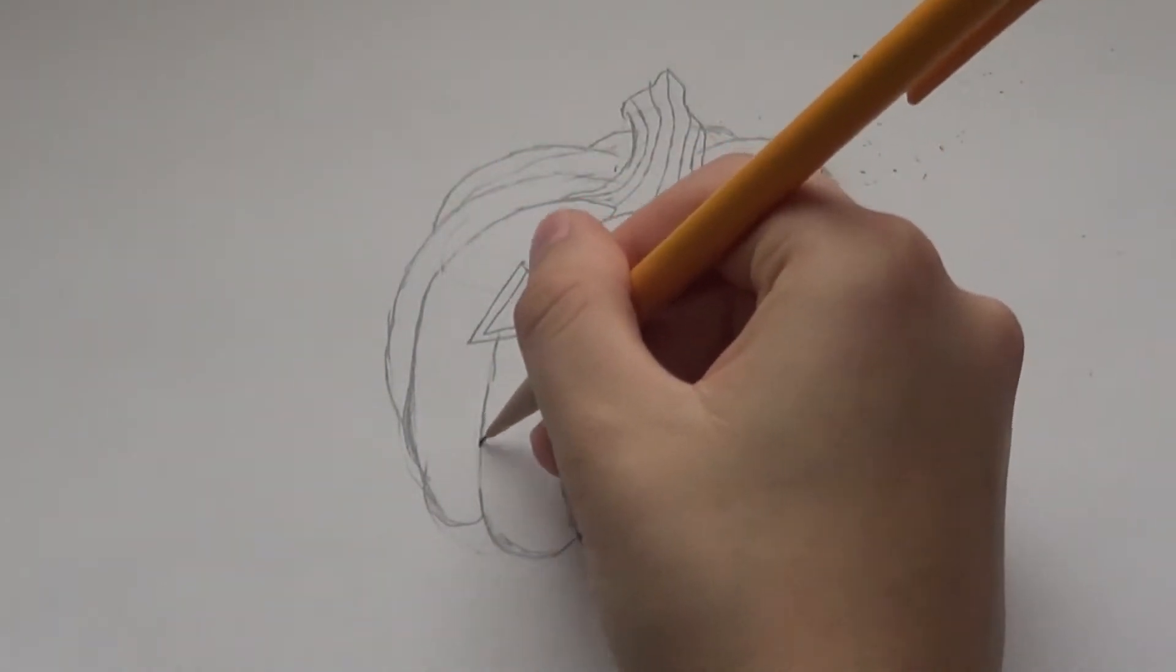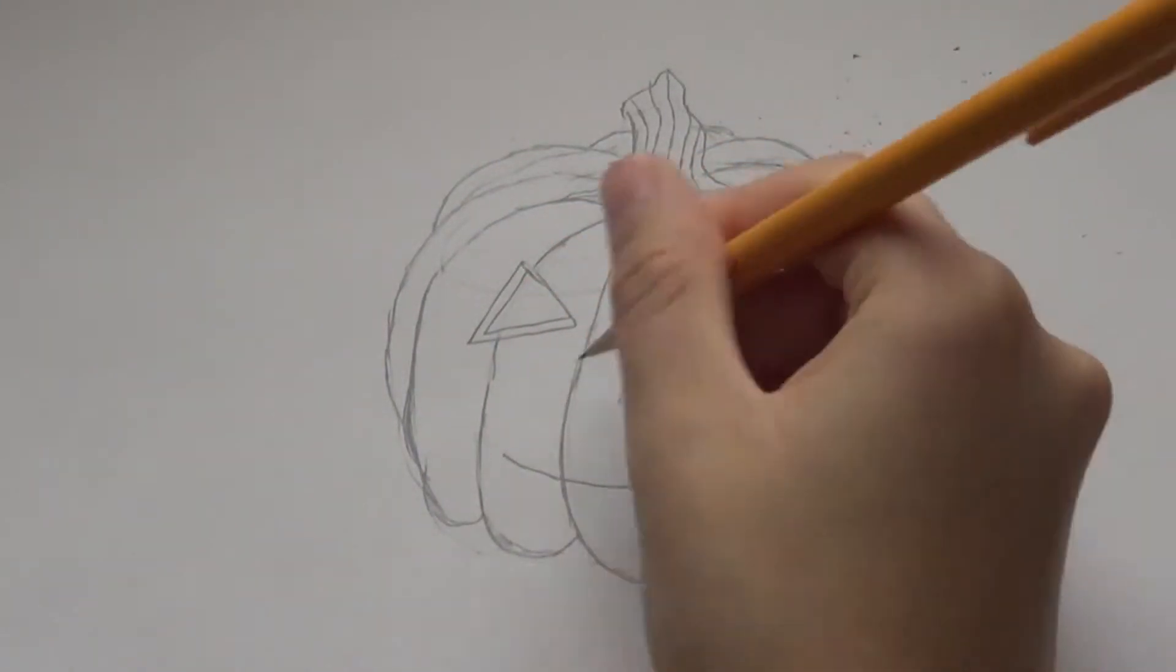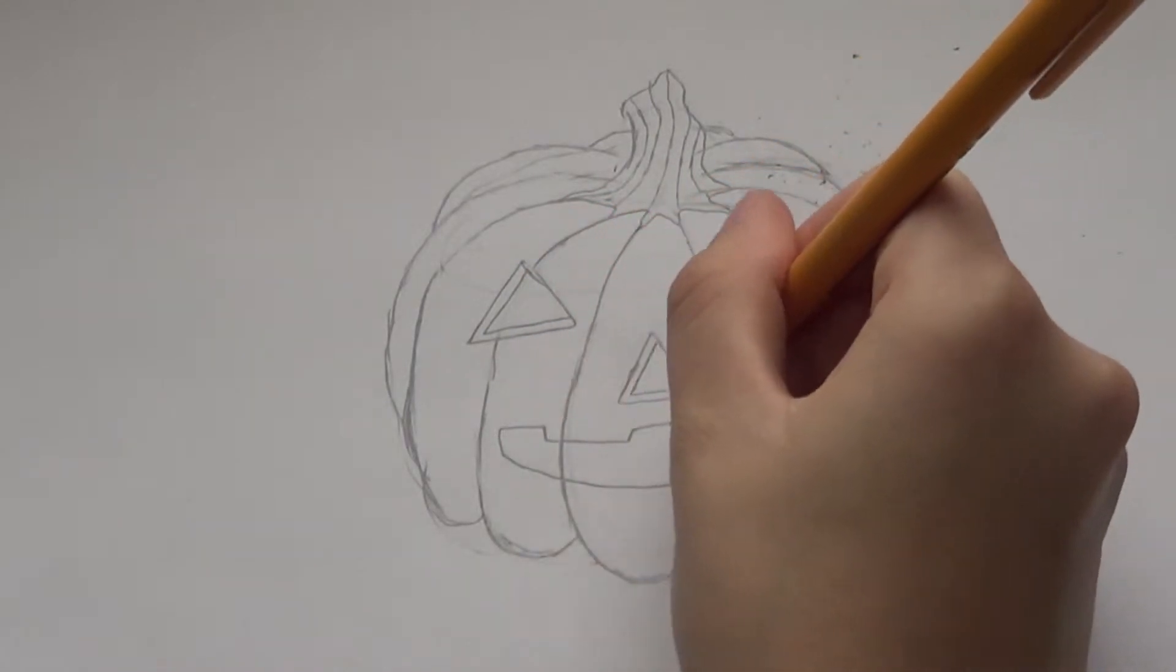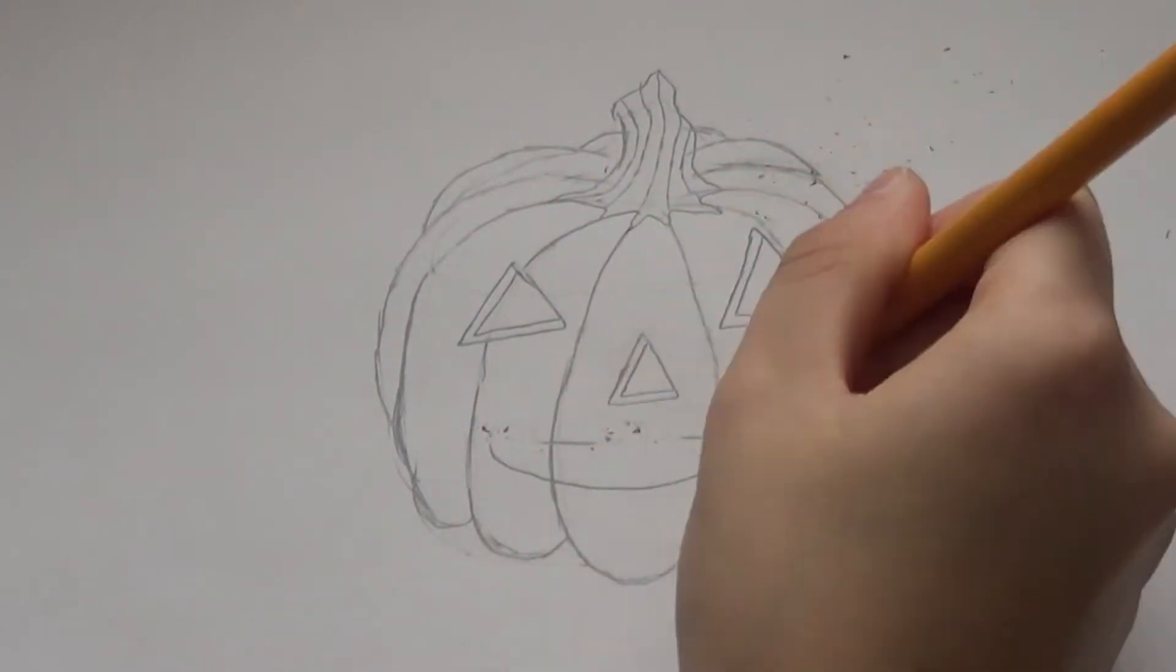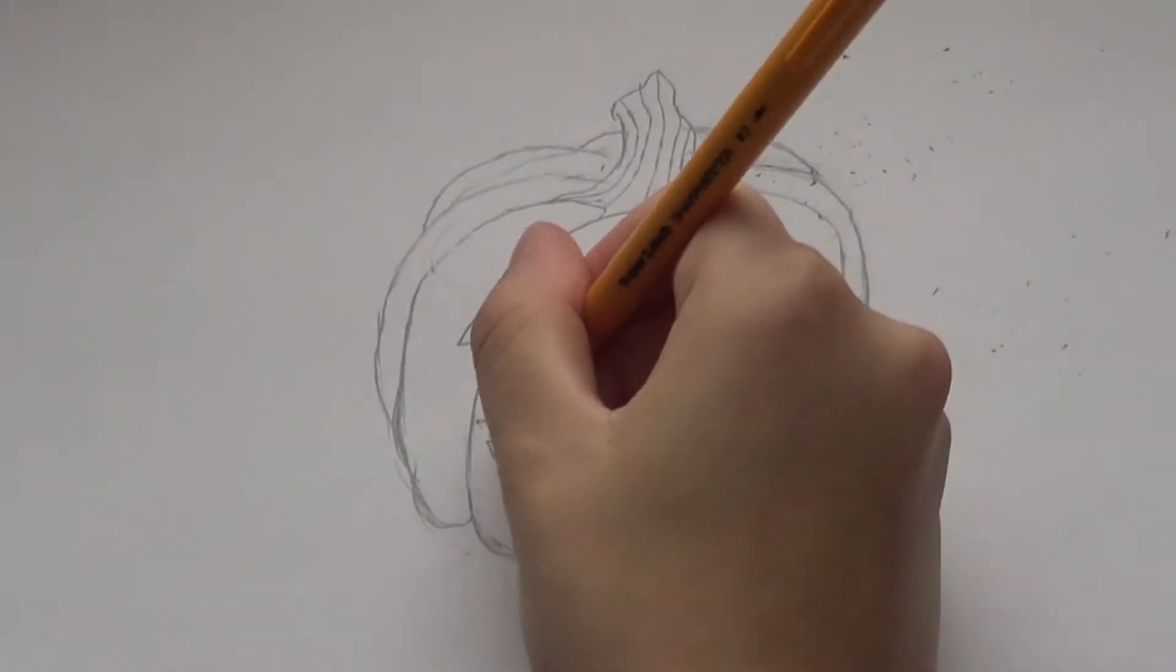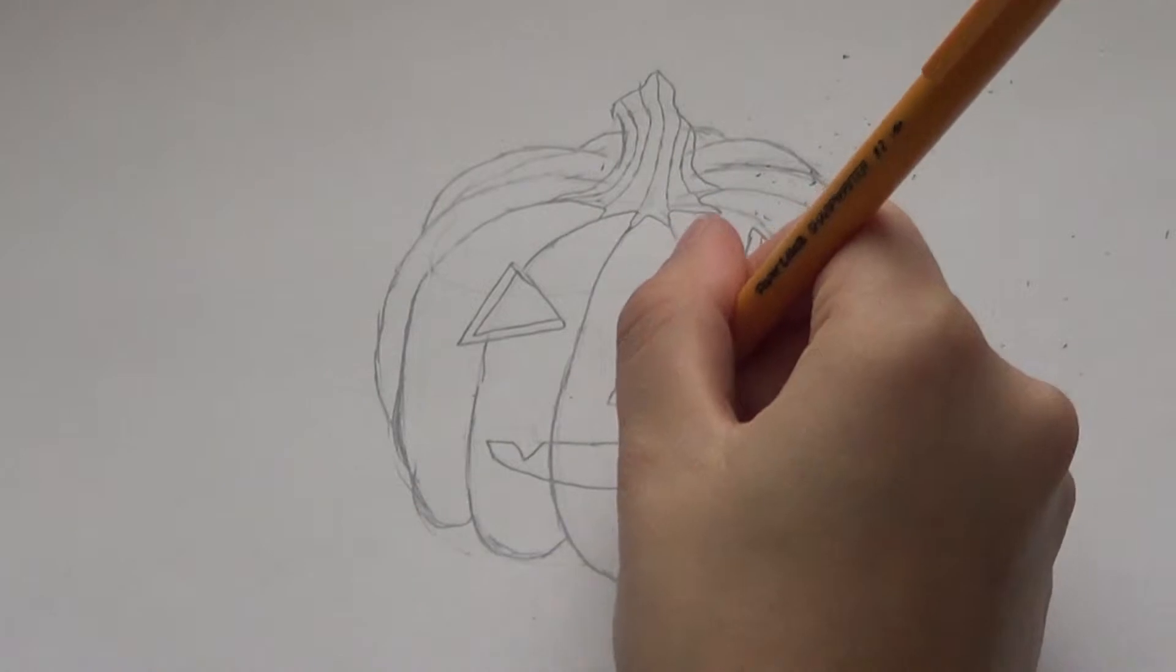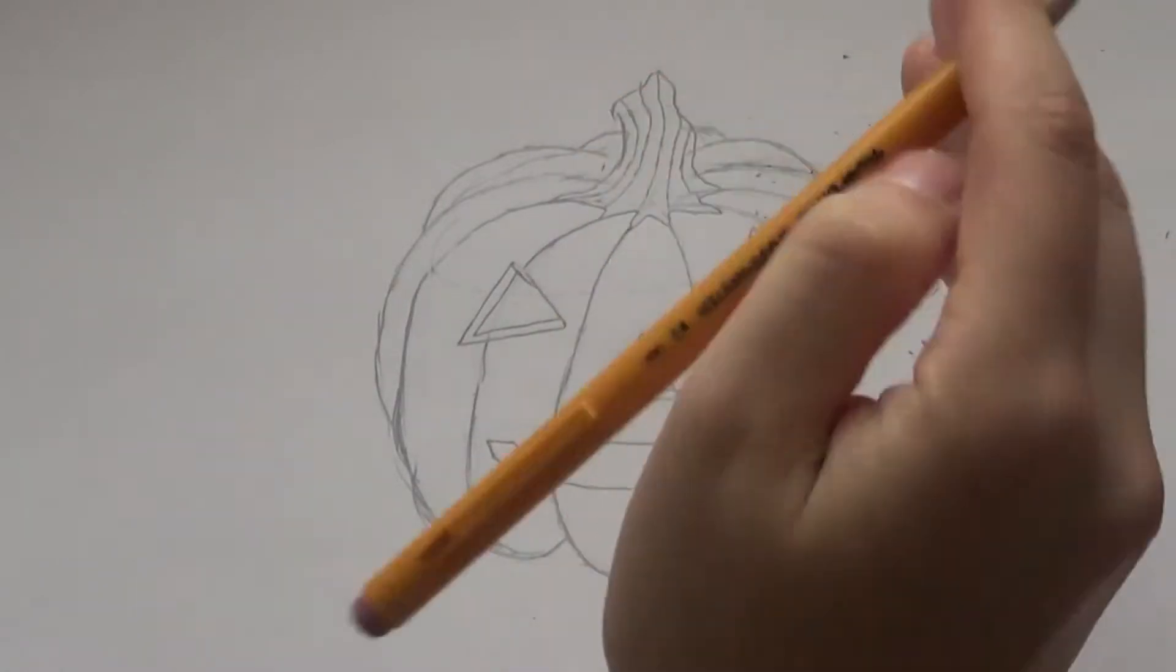Then at first I drew the mouth with these rectangular teeth and then I decided to give my jack-o-lantern fangs. So you can use any shape for the face. I just went for some pretty common face shapes.